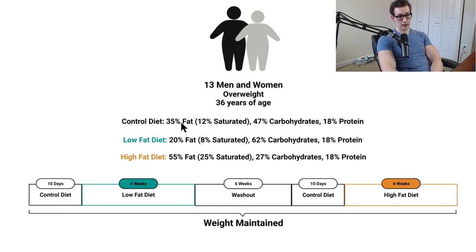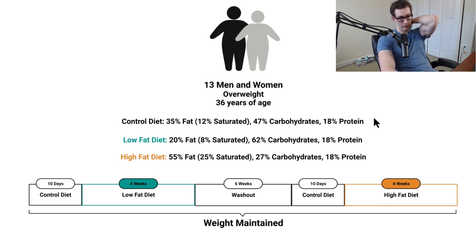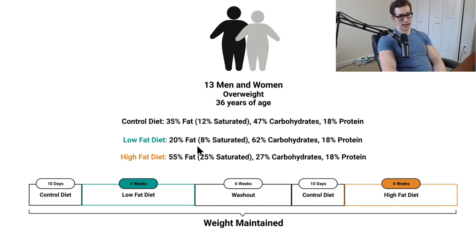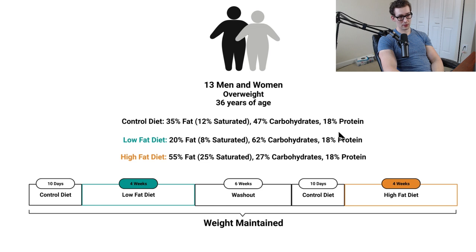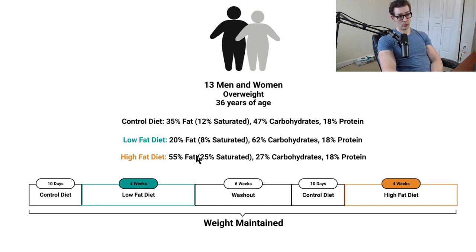They were given a control diet consisting of 35% fat, 12% of which was saturated fat, 47% carbohydrates, and 18% protein. Protein levels were clamped across all three diets. They were on this control diet for 10 days to get everyone on the same page, and then they were randomized into the low fat diet or the high fat diet. People on the low fat diet consumed 20% fat — which is pretty low — 8% saturated fat, and 62% carbohydrates. People on the high fat diet consumed 55% fat, and 25% saturated fat.